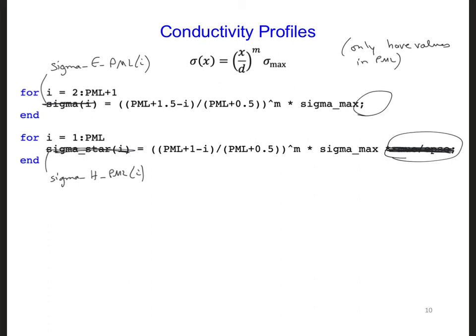Otherwise, notice that the HY's are still offset by one half of a grid cell. So we have PML plus one instead of PML plus 1.5.